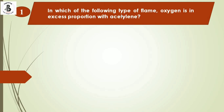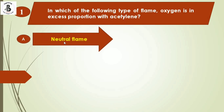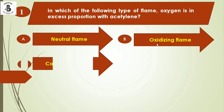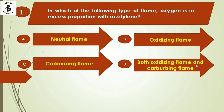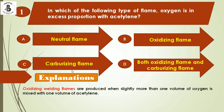In which of the following types of flame is oxygen in excess proportion with acetylene? Option A: neutral flame, Option B: oxidizing flame, Option C: carburizing flame, and Option D: both oxidizing flame and carburizing flame. In case of oxidizing welding flames, slightly more than one volume of oxygen is mixed with one volume of acetylene — more than 50% contribution from oxygen.